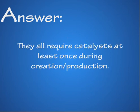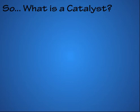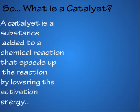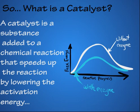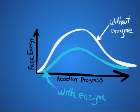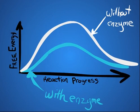They all require catalysts at least once during their production. So, what is a catalyst? A catalyst is a substance that is added to a chemical reaction that speeds up the reaction by lowering the activation energy. For example, enzymes are a type of catalyst.